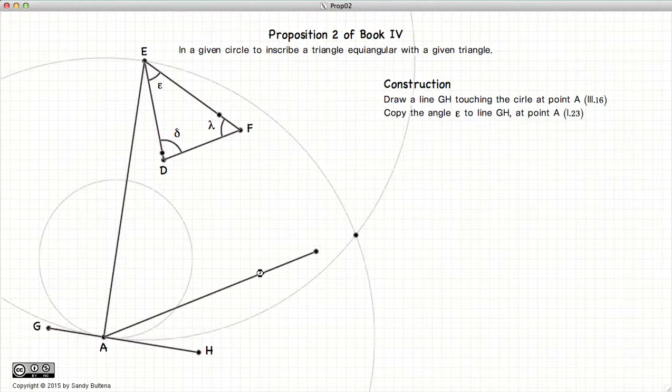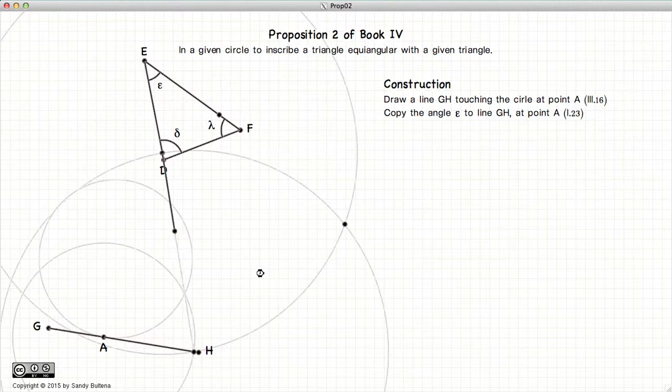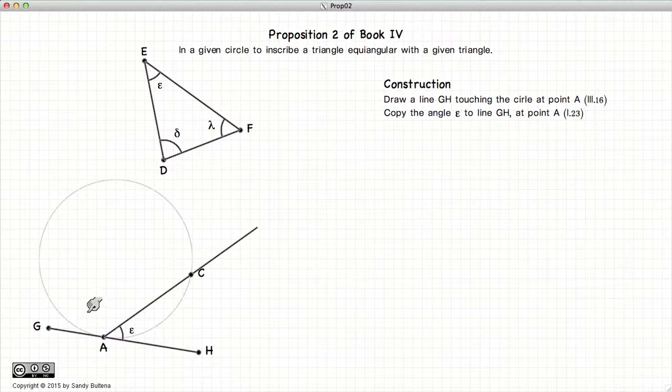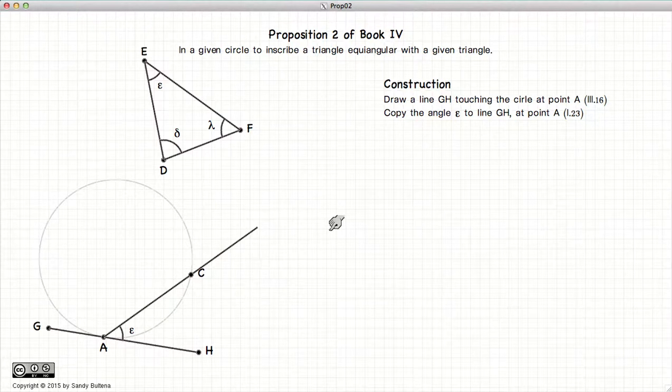The next thing we need to do is we need to copy the angle epsilon to the point A. So we have copied the angle epsilon to A using the methods described here.